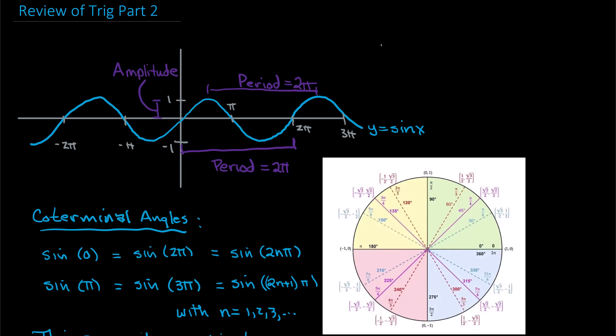One term you need to be familiar with is the period of the function. This talks about how long it takes before the function returns to its original position. Looking at this graph, it starts at zero, goes up, comes down. Now it's zero there but on a downward trend. Over here it's zero again, back on an upward trend. When you pass through a wave and get back to the position where you were the first time, that is a period.